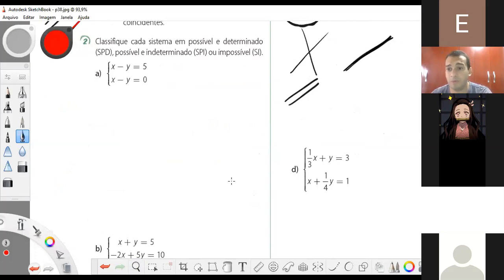Mas como que a gente vai fazer isso quando a gente tiver uma equação? Quando a gente tiver uma equação, a gente vai resolver a equação e vai dizer se é sistema possível e determinado, sistema possível e indeterminado ou sistema impossível.